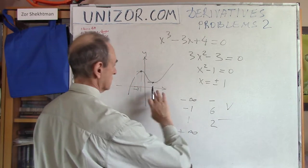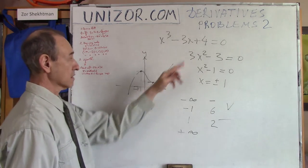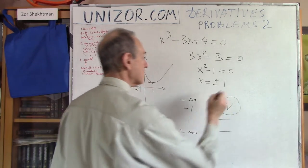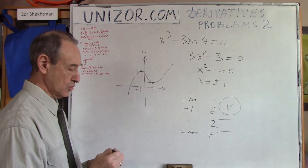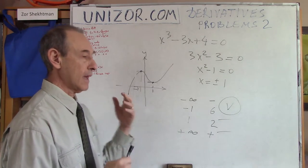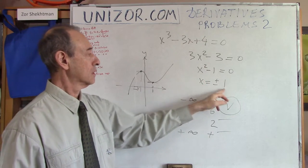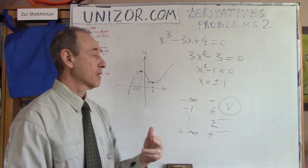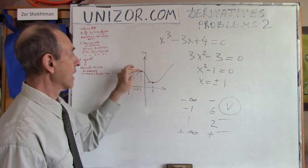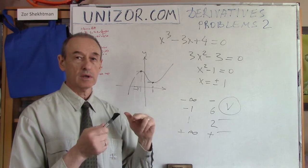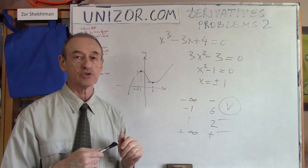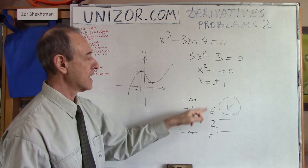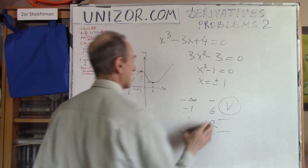At plus infinity the function is increasing and also positive — going from positive to positive, so again no solution. Therefore there is only one solution, on the interval from minus infinity to minus 1. By analyzing the zeros of the derivative and the intervals of monotonic behavior, we can find on each interval whether the function has a zero, by comparing the signs of the function at both ends.